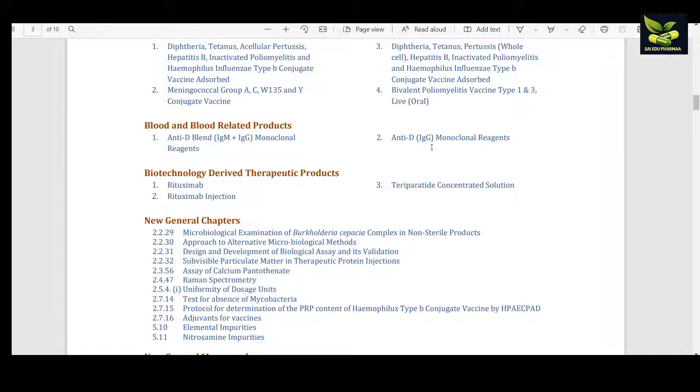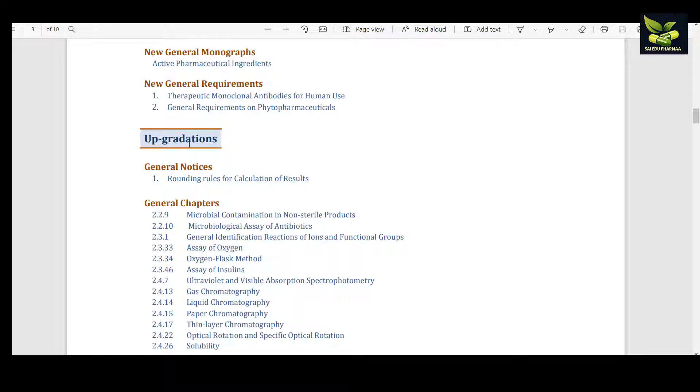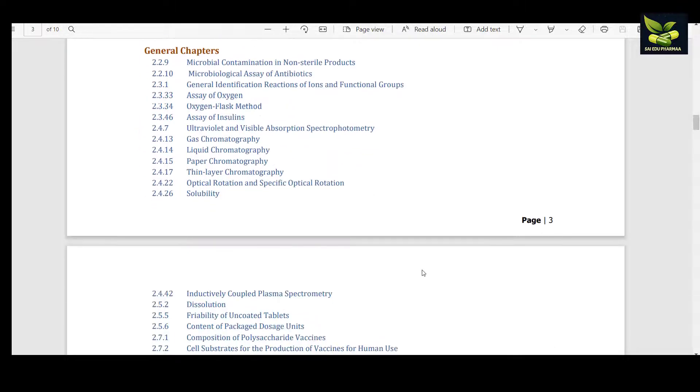Then three biotech-derived therapeutic products have been included. These are some of the general chapters which have been included. You can see a few upgrades in it, like rounding rules for calculation of results.